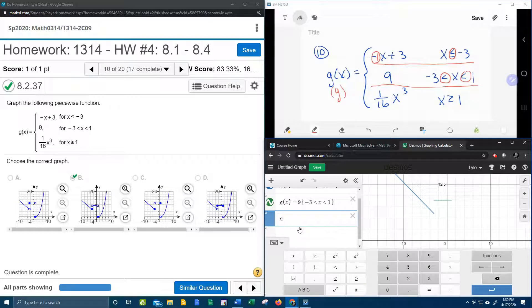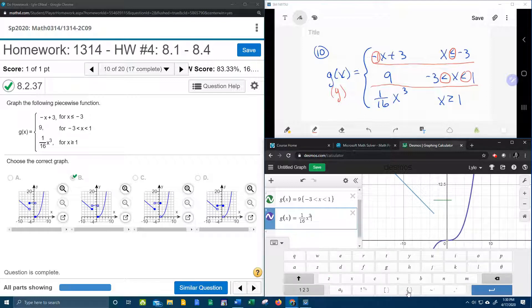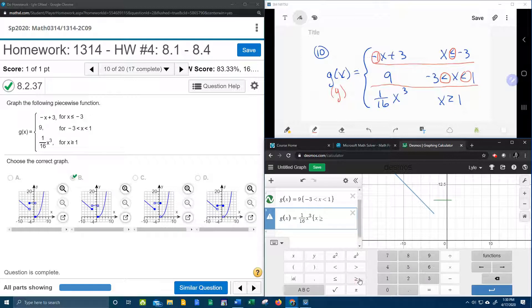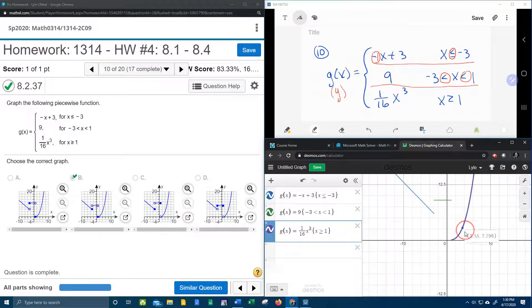And for the last piece, we're going to say g of x equals 1/16th x to the 3rd. And again, for our restriction, we're going to say x is greater than or equal to 1. And there's the last piece,